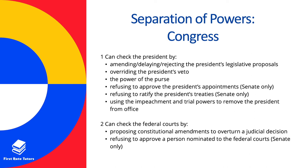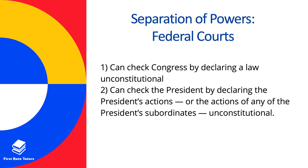Congress can also monitor federal courts by proposing constitutional amendments to overturn a judicial decision, and the Senate can refuse to approve a person nominated for federal courts. When it comes to the power of the federal courts, they can check Congress by declaring a law unconstitutional, and they can monitor the president by declaring the president's actions — or those of the president's subordinates such as the vice president — as unconstitutional.